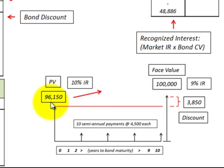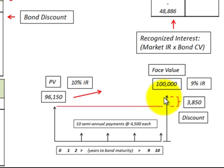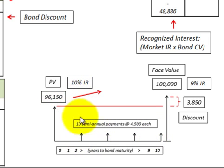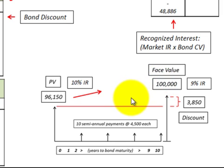And then we have its present value, or what it's worth when we issue it. That present value is based on discounting the face value or the principal amount plus those interest payments back at a market rate of interest, and then you get the present value of that bond. You compare that to the face value, and the present value would be less than the face value for a discount.